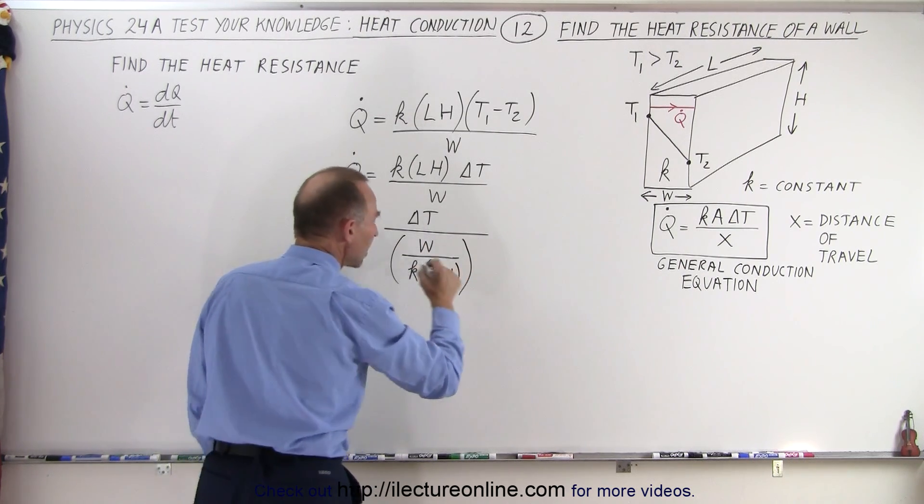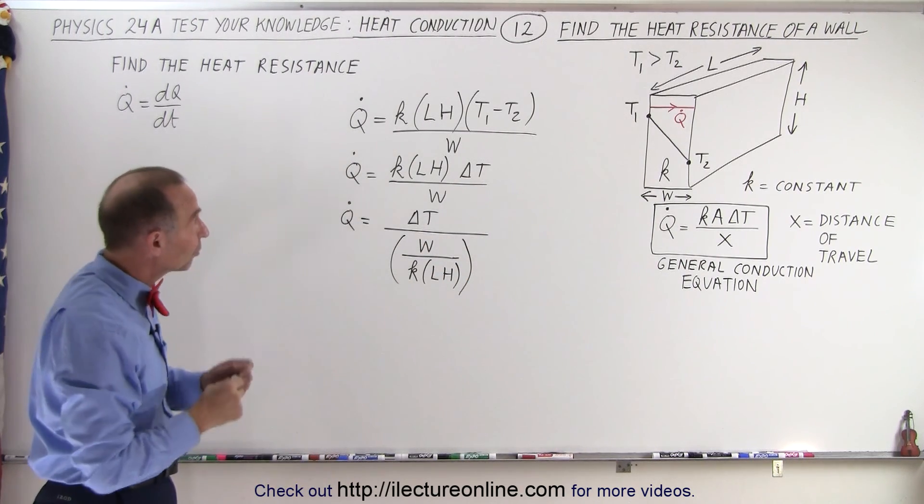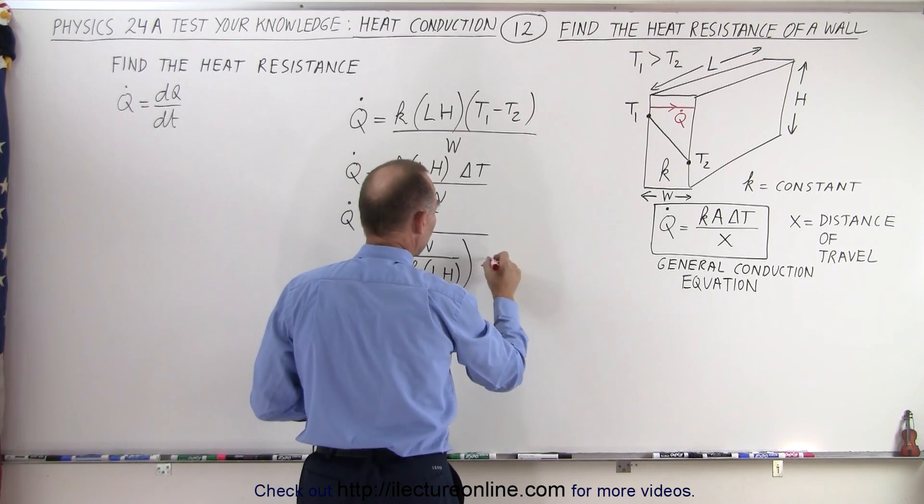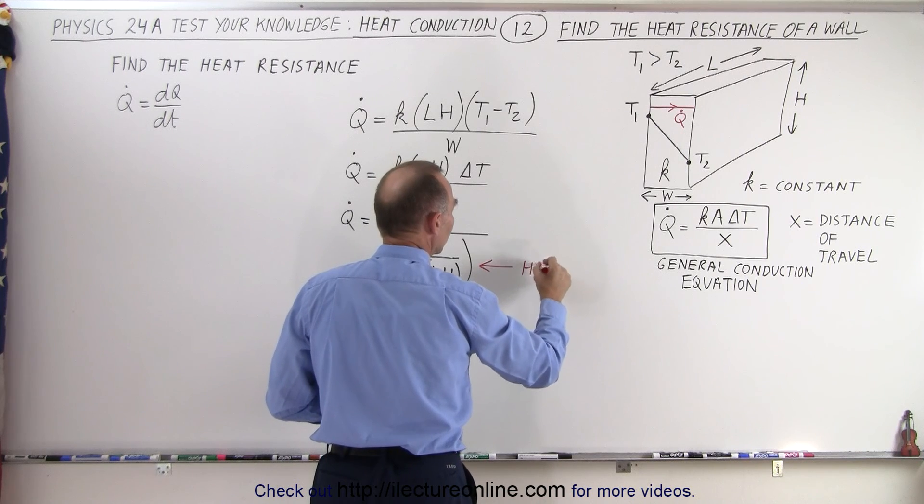And this quantity right here in the denominator is considered the heat resistance. So the denominator portion is the heat resistance.